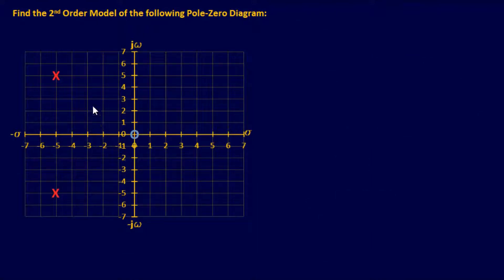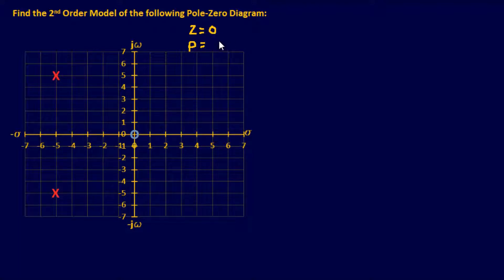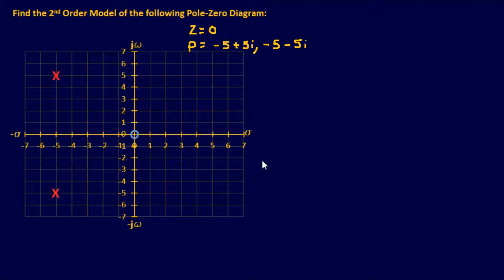For the last example, we're working backwards — finding the second-order transfer function from a given pole-zero diagram. From the diagram, we have two poles and one zero. The zero is at the origin (0, 0). One pole is at negative 5 real and positive 5 imaginary, so negative 5 plus 5j. The other pole is at negative 5 real and negative 5 imaginary, so negative 5 minus 5j.